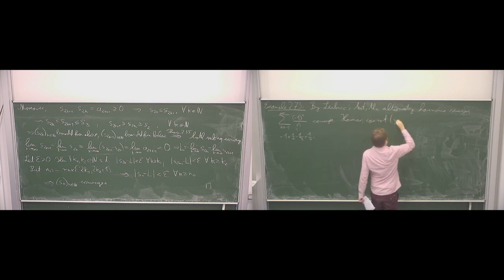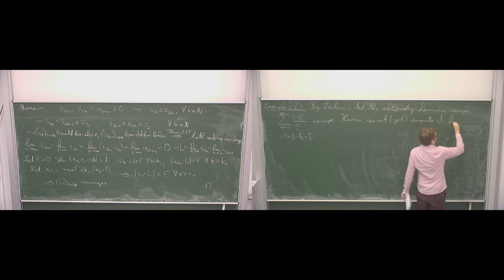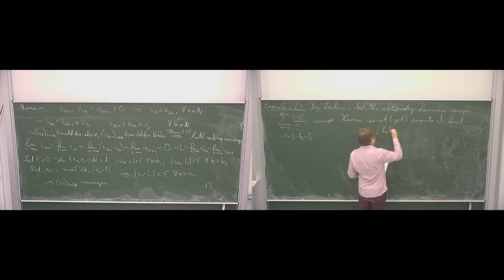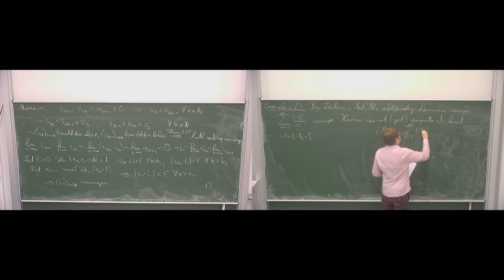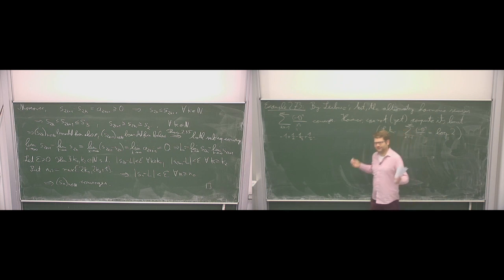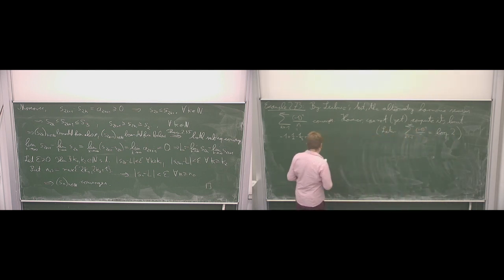We will see more tools later to compute its limit, which is actually very hard. This is a typical example where a convergence test tells us directly that it converges, but the limit is really hard to see. Later it turns out this limit can be computed. I'll just give a preview: this alternating harmonic series converges against the natural logarithm of 2, which is something we will see later when we study logarithms.